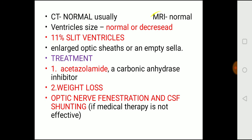Imaging: CT and MRI are normal. Ventricles will be normal size — no hydrocephalus. However, you may see slit ventricles (reduced in size, about 11%), enlarged optic sheaths, and empty sella on MRI. Treatment: acetazolamide (carbonic anhydrase inhibitor) to decrease CSF production; weight loss because obesity is linked to this disease; optic nerve fenestration; and CSF shunting as a last procedure if medical therapy fails.